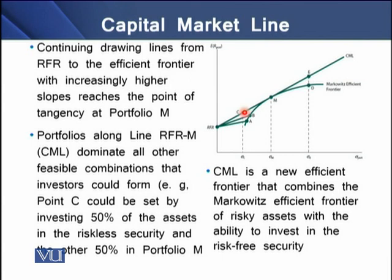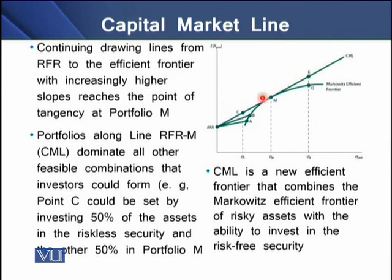For example, at point C, an investor could allocate 50% of assets to risk-free securities and the remaining 50% to portfolio M. By adding all such feasible combinations, we form a complete straight line—the CML—which represents a new efficient frontier. This means we now have two efficient frontiers: the Markowitz efficient frontier with risky assets, and the CML that incorporates risk-free securities.